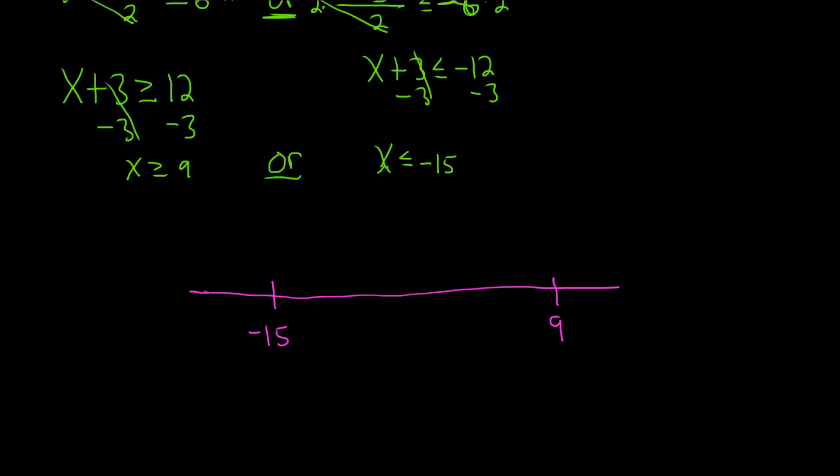Let's see. We want to shade everything in from the inequalities. So x greater than or equal to 9, that's all of this stuff over here, bigger than 9. x less than or equal to negative 15, that's all of this stuff over here, smaller than negative 15.